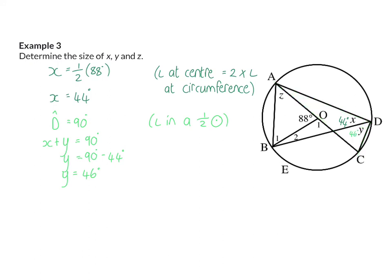And when I now move on to Z, I will see that angle Z is subtended by arc BC, and from arc BC I can also form angle Y, which means they will be the same size. So angle Z is equal to angle Y, which is equal to 46 degrees, and my reason for that, there are angles in the same circle segment.